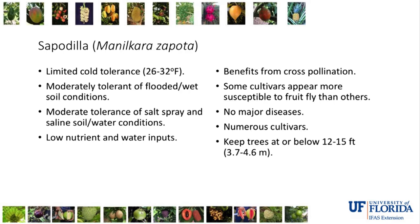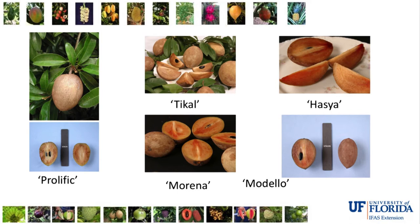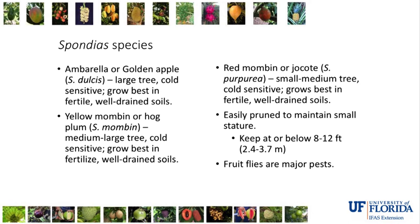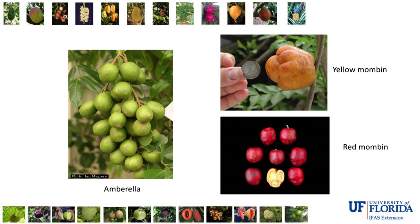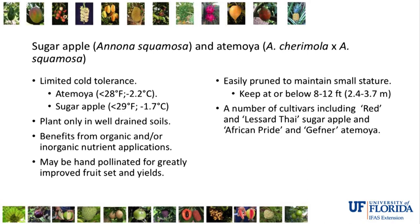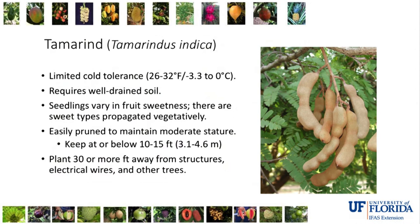Sapodilla can be a large plant but can be kept productive and small, with a number of different varieties. Spondias species — including Ambarella or Golden Apple, Red Mombin, and Yellow Mombin — are another option where the plant can be kept small, though fruit flies can be a problem in some areas. Sugar apple is a truly tropical annonaeceous fruit that is easy to keep small and pollinated by sap beetles rather than bees. Tamarind is a large tree that produces distinctive pods.